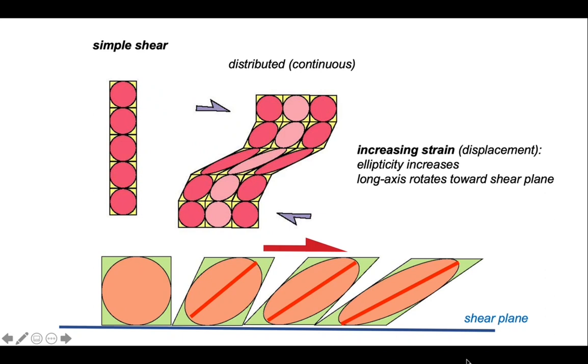With increasing strain, the ellipticity is increasing and the long axis of our ellipse rotates towards the shear plane. If we hark back to our comparison with faulting, by increasing strain we mean if the displacement in our shear zone increases, the ellipticity increases and this rotation increases as well.